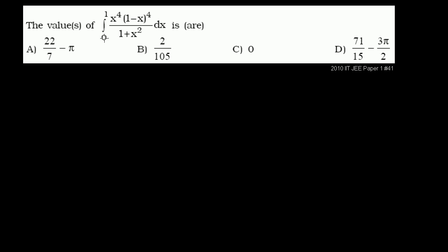The definite integral from 0 to 1 of x to the fourth times (1 minus x) to the fourth, all over 1 plus x squared, dx equals some value r. They say r because more than one answer might be correct — this is a multiple correct answer problem. The best approach is to expand the numerator, simplify with the denominator, and take the antiderivative.